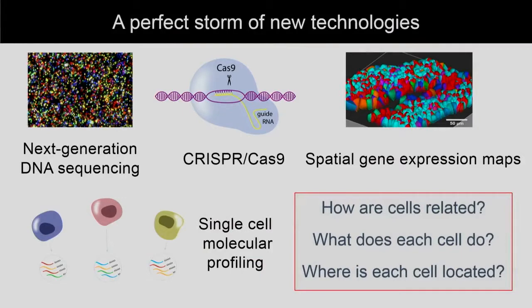So the goal here is really to attack this question: how can we achieve global views of development for more complex animals? In recent years, we've had what I'll call a perfect storm of technologies for trying to take on this problem — sequencing, CRISPR, spatial gene expression technologies, and other technologies for single-cell molecular profiling. The question is, can we put some of these together to attack the problem of cell lineage tracing in non-transparent, large models?